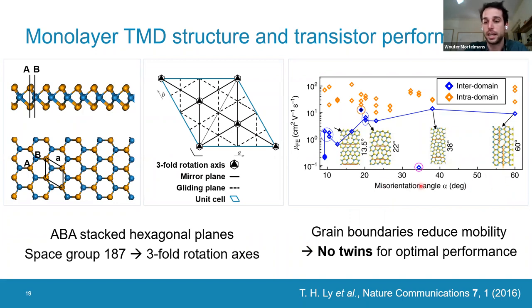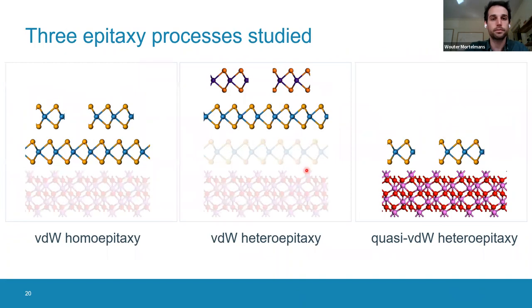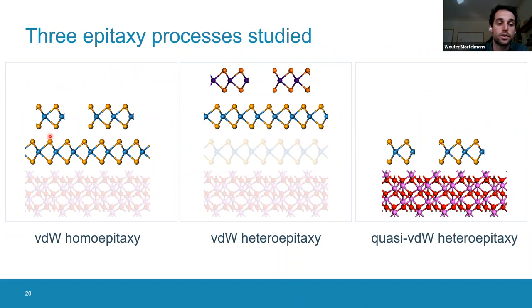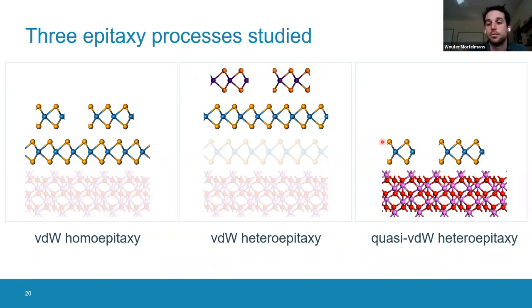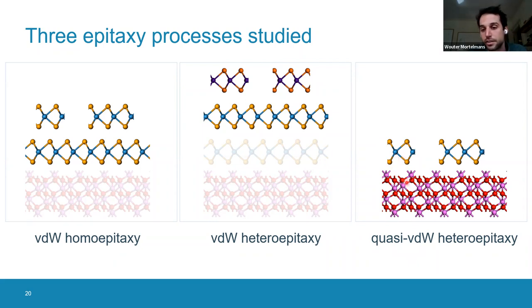During my PhD, I studied three different epitaxial processes and looked at rotational domain formation in each. We focused on homoepitaxial growth — growing a TMD on top of its own surface; heterostructures — growing a TMD on a different TMD surface; and integrating a TMD on a conventional 3D substrate like sapphire, called quasi-van der Waals heteroepitaxial growth, since the interface interaction is a mixture of van der Waals and covalent interactions.